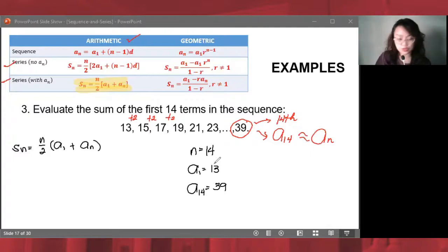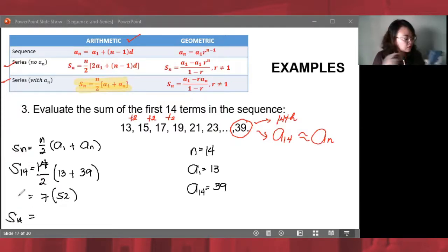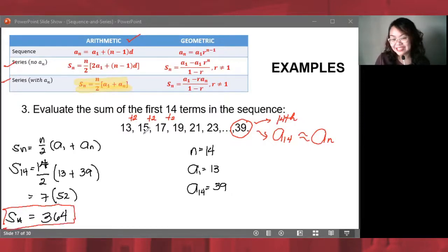Next, let's continue. Let's do substitution first: 14 over 2, times a₁ which is 13, plus aₙ which is 39. So we have 7 times 52. And S₁₄ is 7 times 52 on our calculator: 364. This is now the sum of all the terms that follow this sequence.